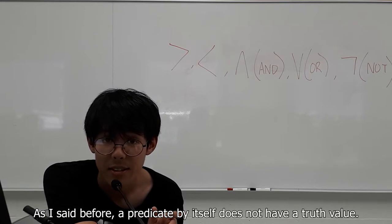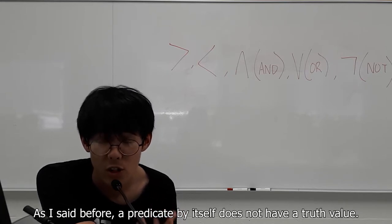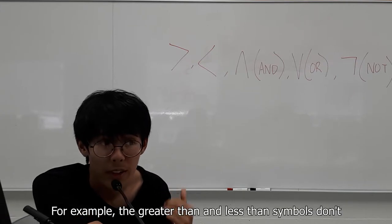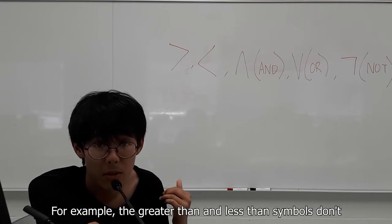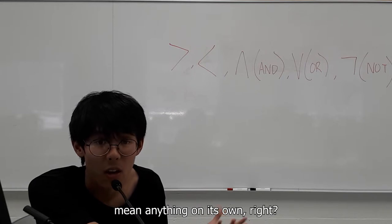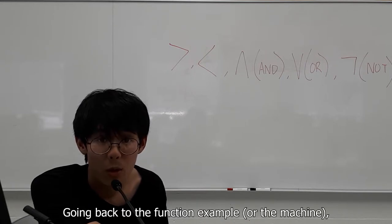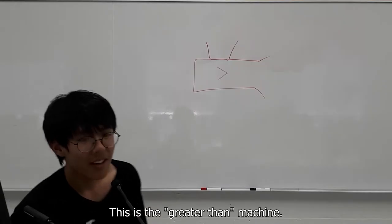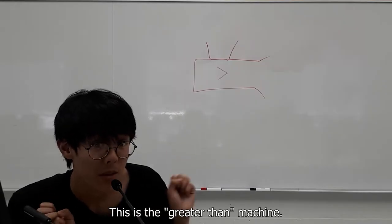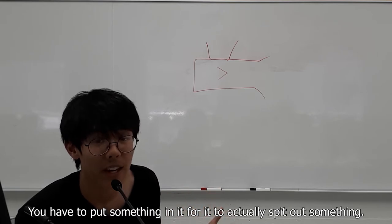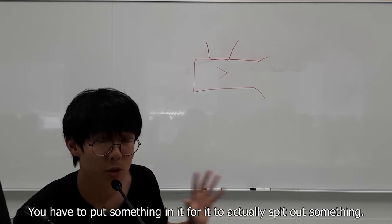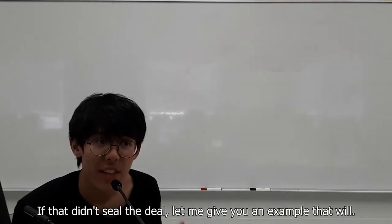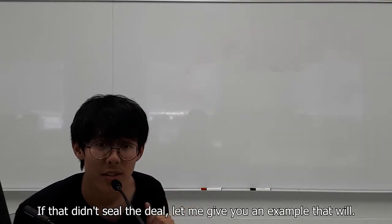As I said before, a predicate by itself does not have a truth value. For example, the greater than or less than symbol don't mean anything on its own, right? Going back to the function example, or the machine. This is the greater than machine. You have to put something in it for it to actually spit out something. You need inputs. If that didn't seal the deal, let me give you an example that will.